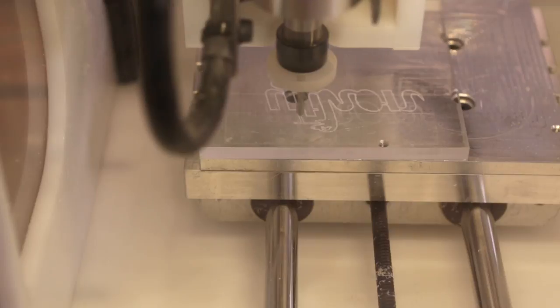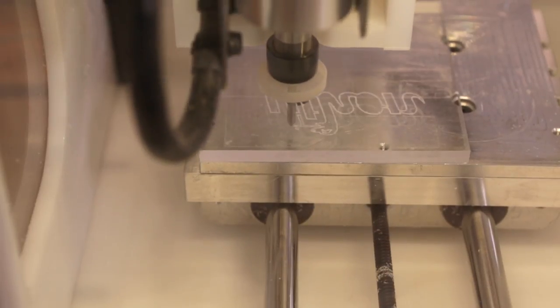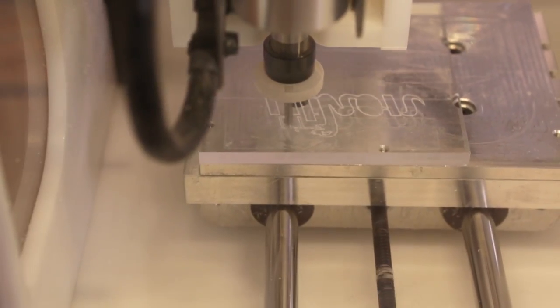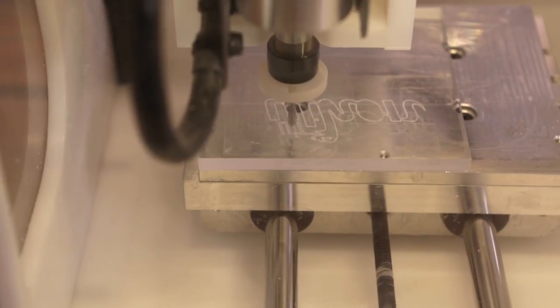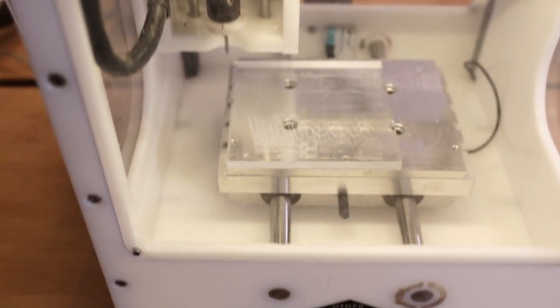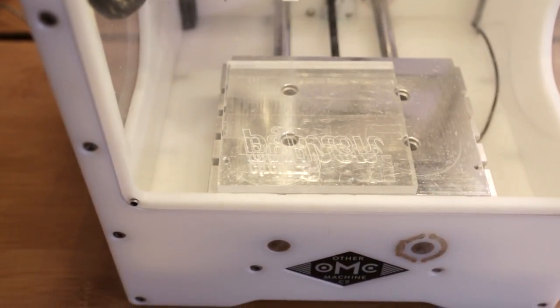It took about a minute and a half to engrave the CircuitPython logo with a feed rate of 1500 millimeters a minute and a depth of 0.2 millimeters. The engraving looks really clean and it produces some pretty nice detail.